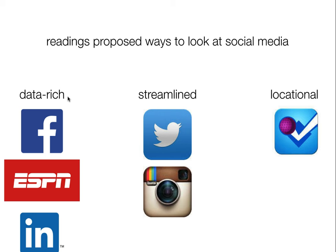In the reading, Galen Clavio delineated three categories of social media rather than focusing on one application specific for use. He focused on data-rich sites, which are used better on a desktop than on mobile, and these include things like Facebook, ESPN, or LinkedIn. These are typically static pages with very little updates and can contain a lot of rich information on them.